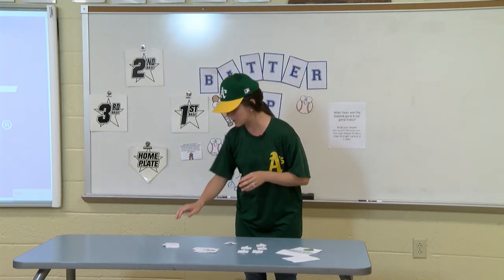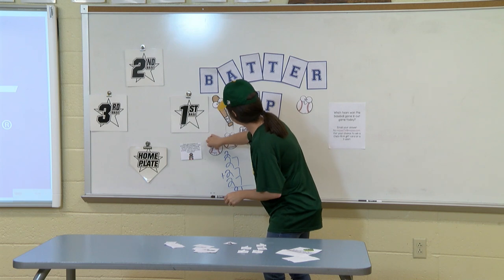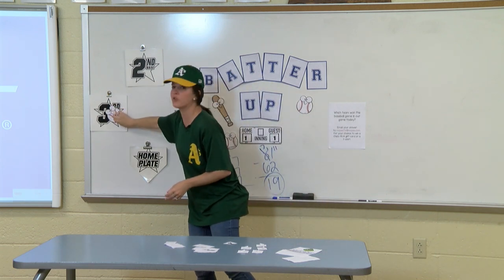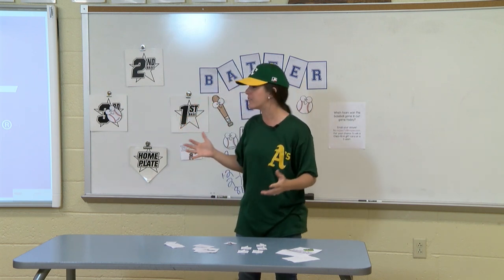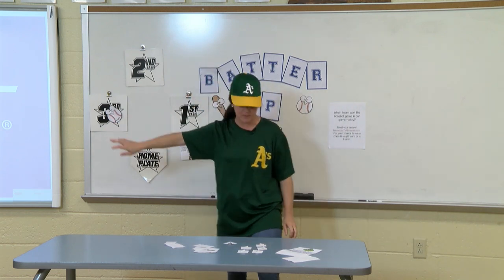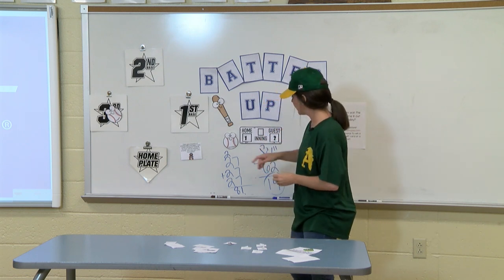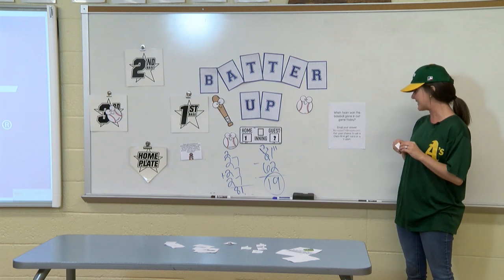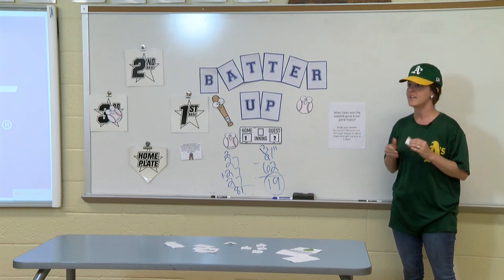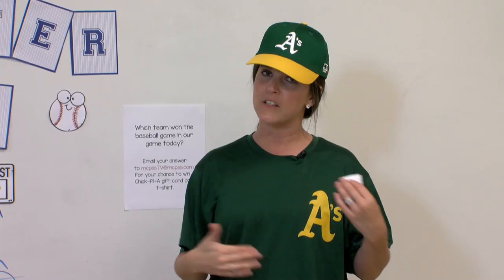Now it's the Angels' turn. They get a triple — three bases, putting them on third base. For time's sake our game is about to end, so we'll give another point to the team closest to scoring, which is the Angels. The Angels won the game two to one. So the answer to email to MCPSSTV at MCPSS.com is the Angels. The Angels won our game today — which makes me a little sad since I'm the A's, but that's okay — we'll bring a better game next time.